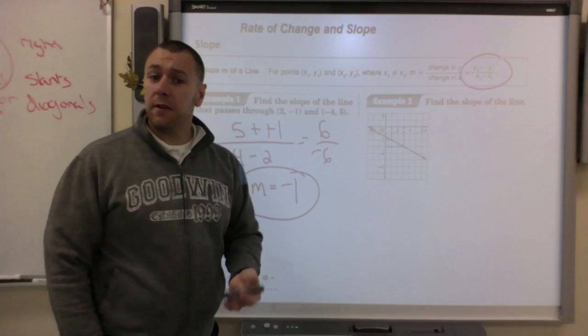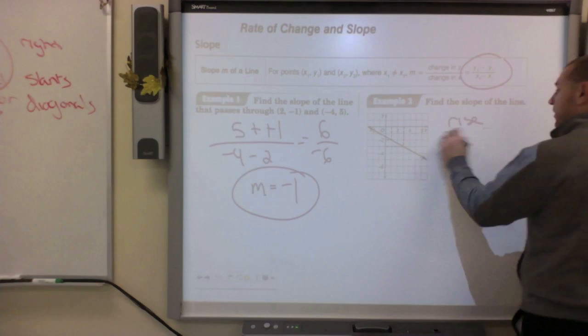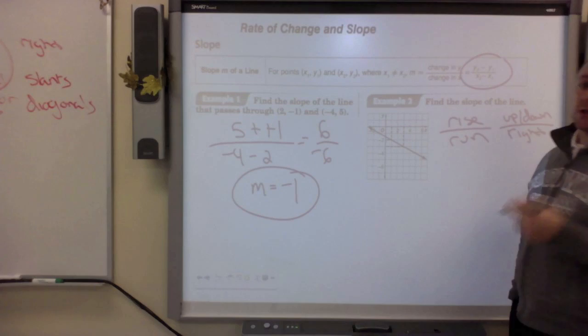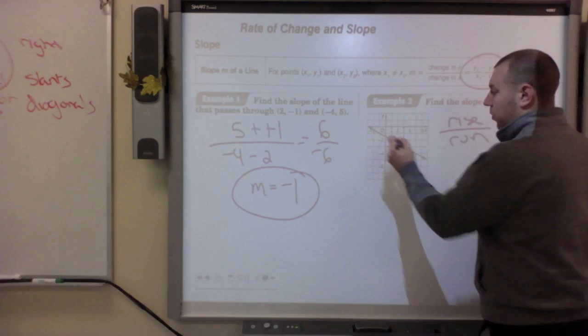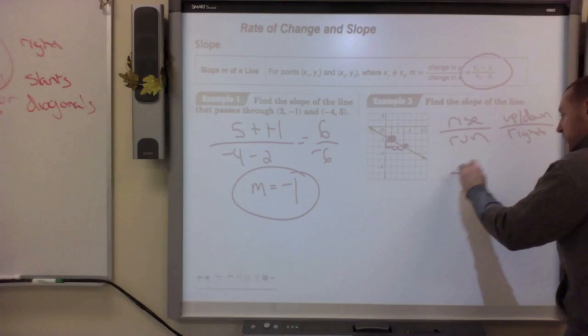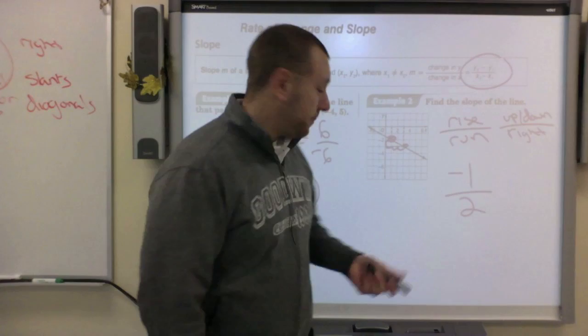If you're given a graph, all you have to do is rise over run. The rise is the up down movement, the run is how far right. You always read graphs left to right. If you choose two points, you want to choose corners. Key is corners. I went down one over two, so since I went down one that's a negative over two. So that's my slope for that.